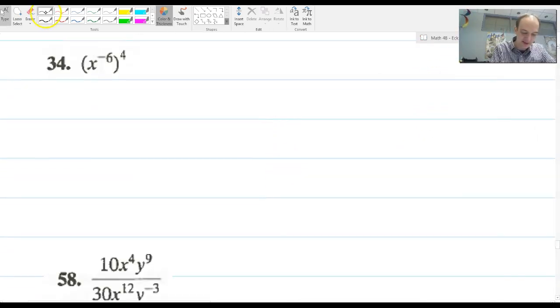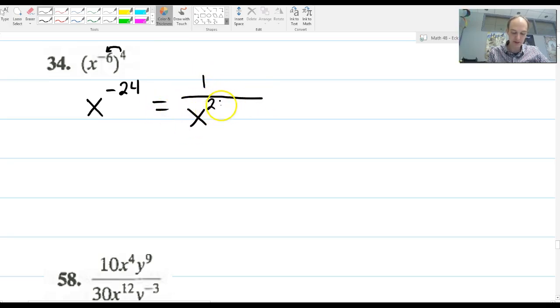Here, x to the negative 6 to the 4. Woo boy! We got a negative exponent. We got a product power. So this thing is a power of a power. These are going to get multiplied together. This is going to be x to the negative 24th. And that is the same as 1 over x to the 24th. Now that's it. That's the only term. So we're done. That was not so bad.